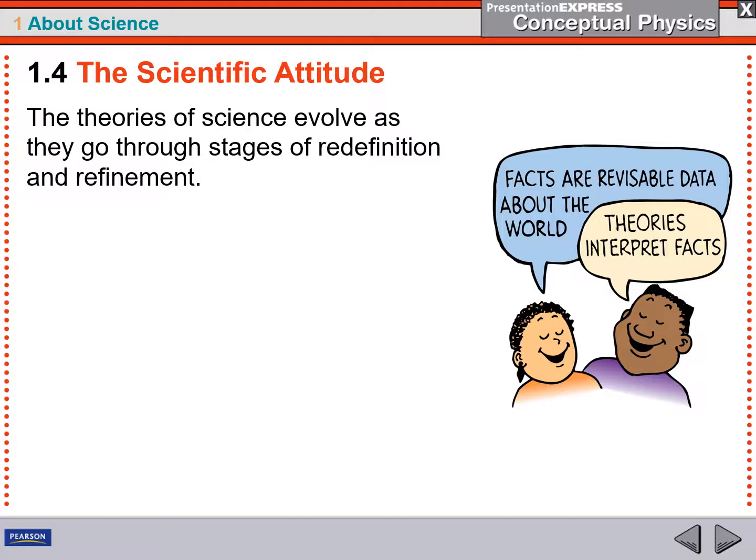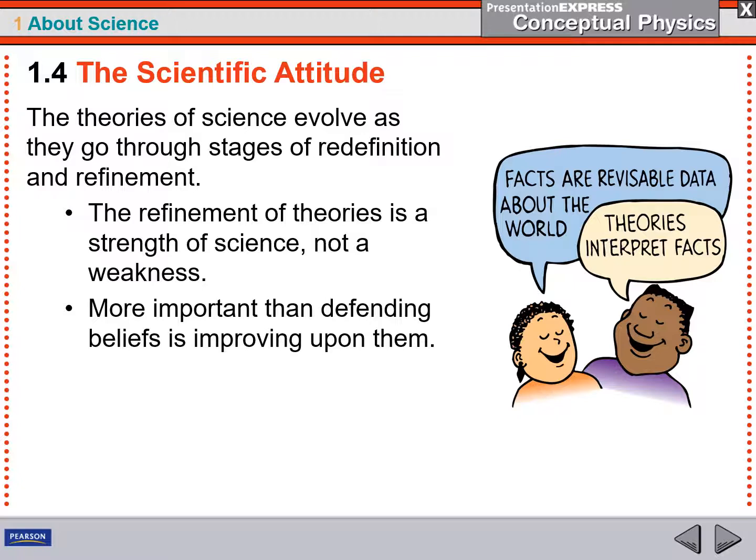Again, I want to emphasize that just because a theory gets set up doesn't mean it is always right. That's the goal of science is to try to get better and better and better understanding of nature and to change theories as they go. So the refinement of theories is a strength of science is not a weakness. It's very important that rather than constantly trying to defend what you believed before, that you constantly try to modify what you're saying based on what you actually can see.